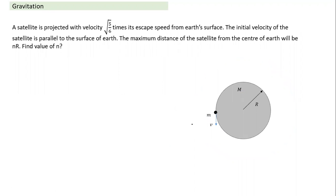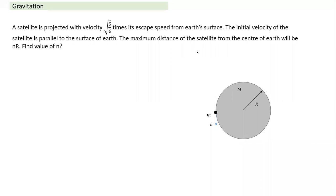A satellite is projected with velocity √(5/6) times the escape speed from Earth's surface. This is less than escape velocity but greater than orbital velocity — we can verify this since orbital velocity equals escape velocity divided by √2. Initial velocity is parallel to the surface of Earth. The question is: what is the maximum distance of the satellite from the center of Earth? Since this velocity is between orbital and escape velocity, it will have an elliptical path — it will not escape to infinity.